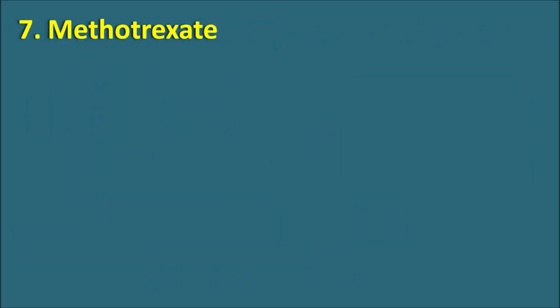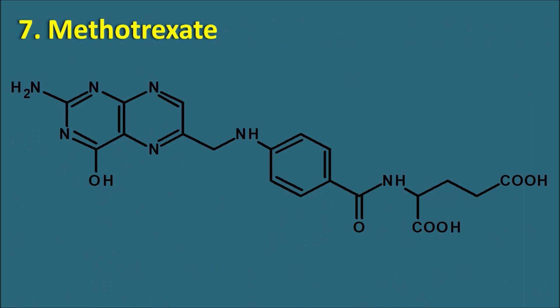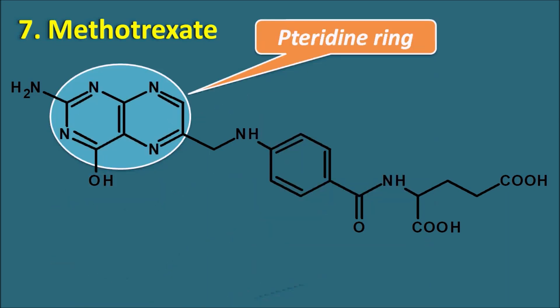The seventh one is methotrexate. Methotrexate has a large structure somewhat similar to folic acid and contains the pteridine ring system. This pteridine ring system is attached by a methyl group to the remaining structure, which is why this drug is called methotrexate. Methotrexate can also be called by another name amethopterin. Methotrexate is an antifolate agent which inhibits the dihydrofolate reductase enzyme, thereby inhibiting the conversion of folic acid into tetrahydrofolate.